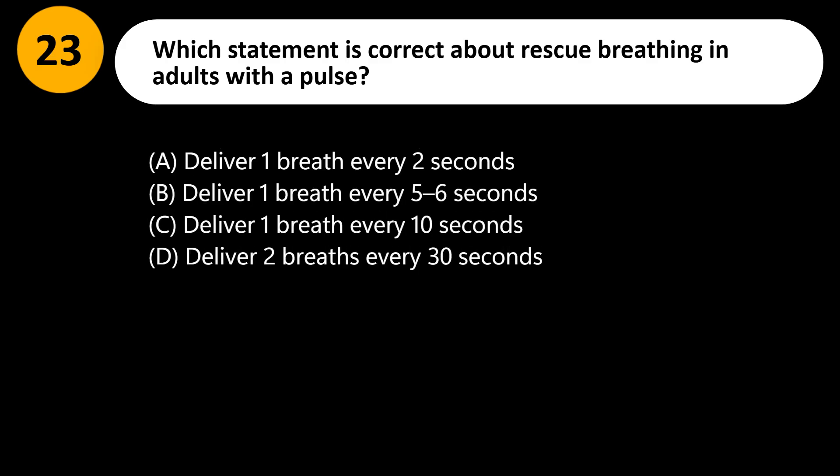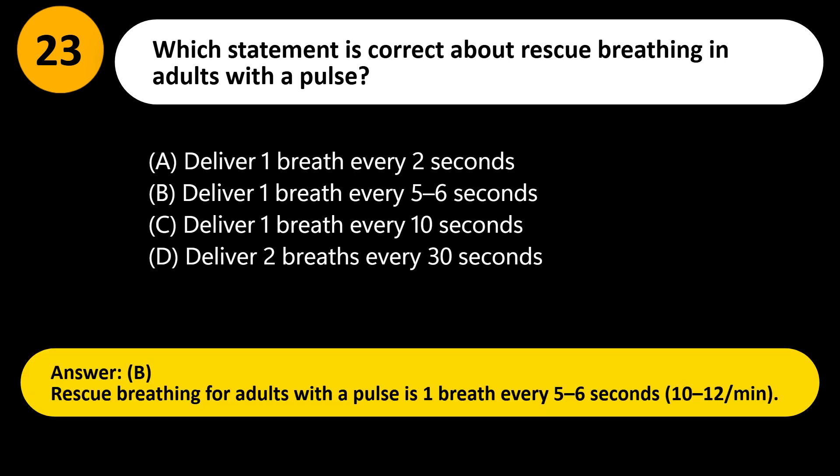Which statement is correct about rescue breathing in adults with a pulse? A) Deliver one breath every 10 seconds, B) Deliver one breath every 5 to 6 seconds, C) Deliver two breaths every 30 seconds. Answer: B. Rescue breathing for adults with a pulse is one breath every 5 to 6 seconds (10–12/min).